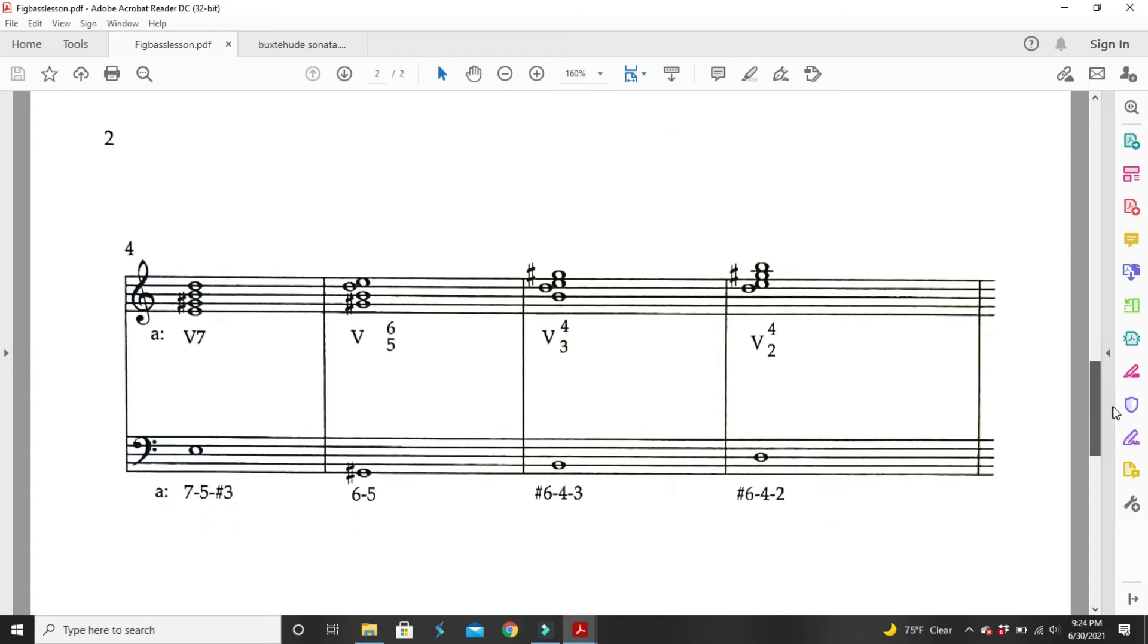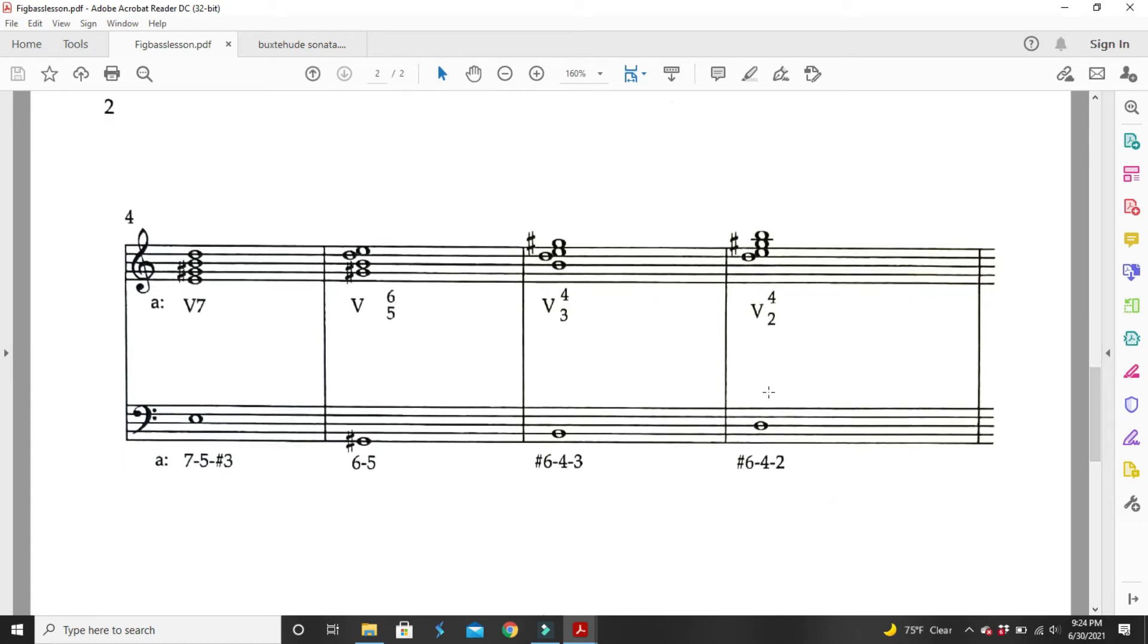Now, in the key of A, here is the V7 chord. It's going to be the E major, minor, seven, along with its inversions.